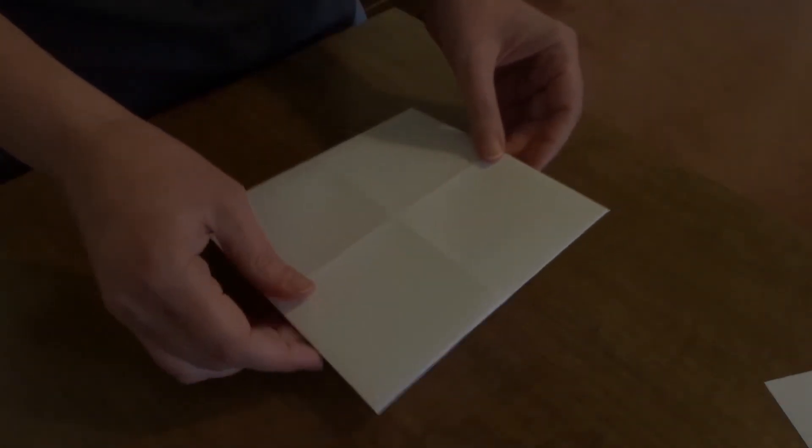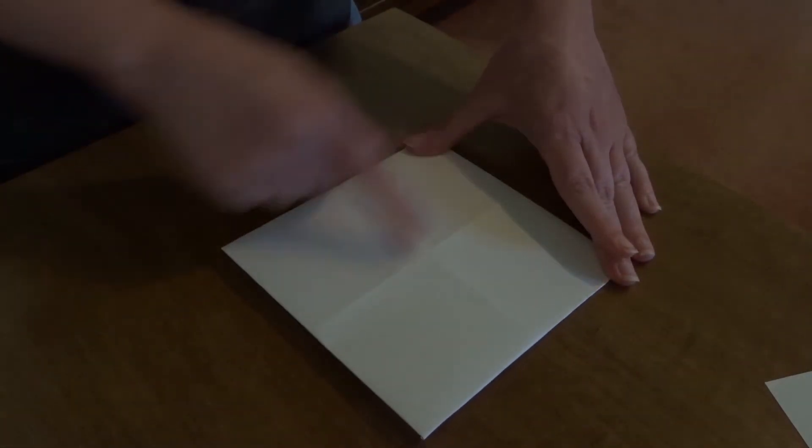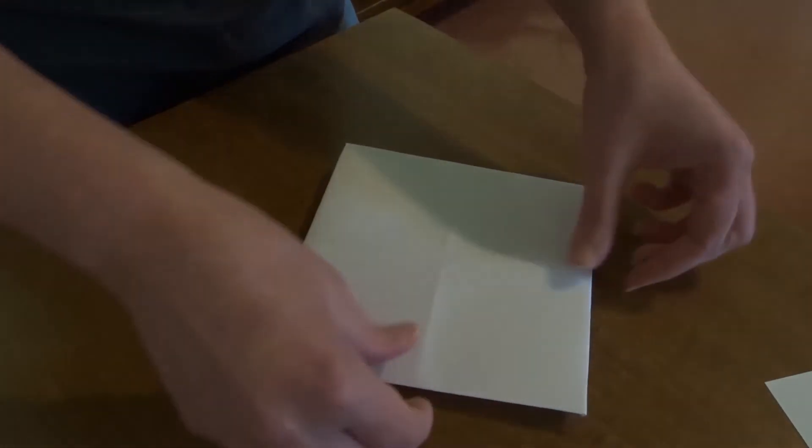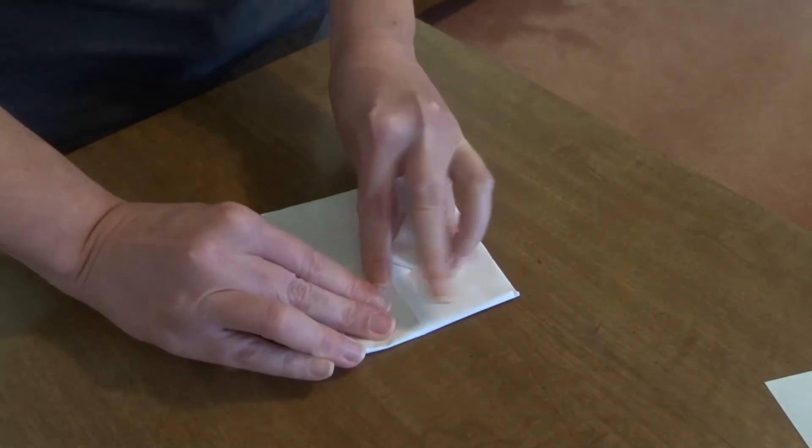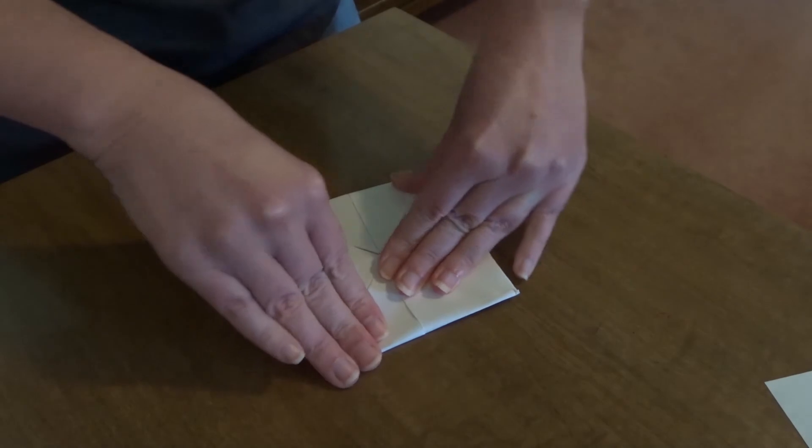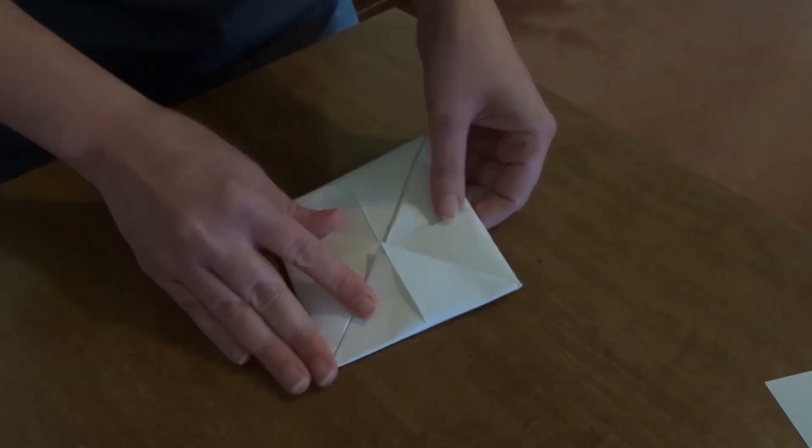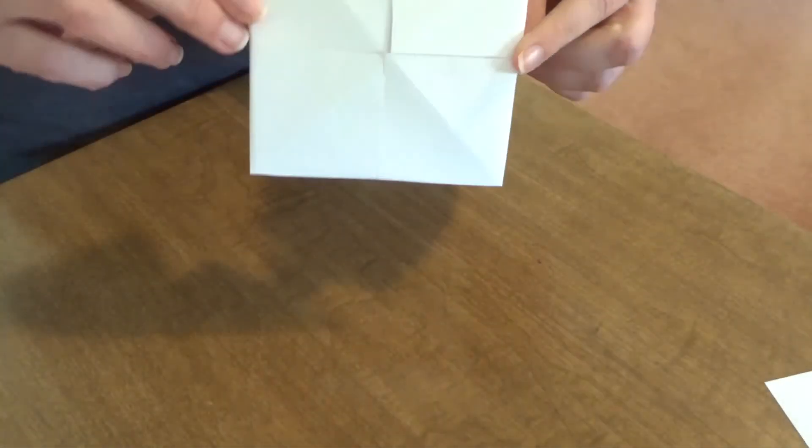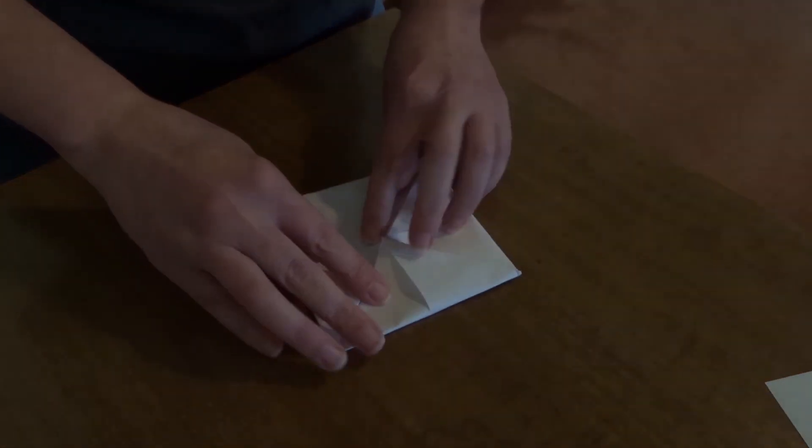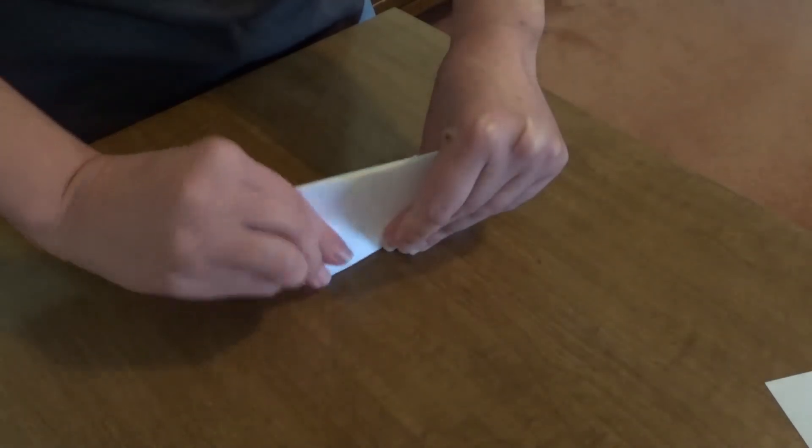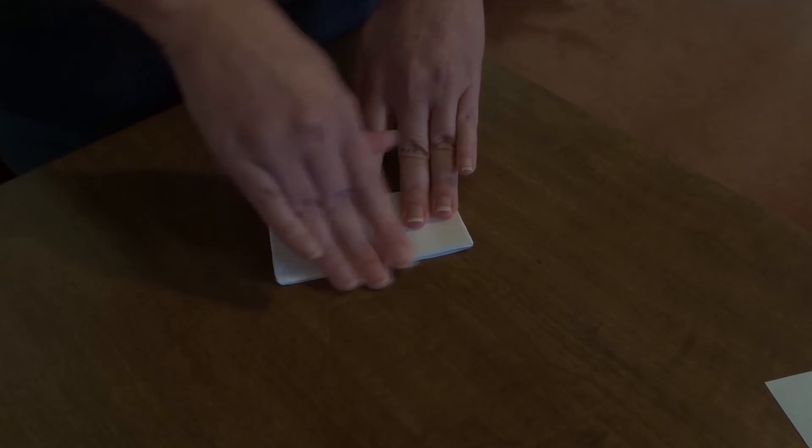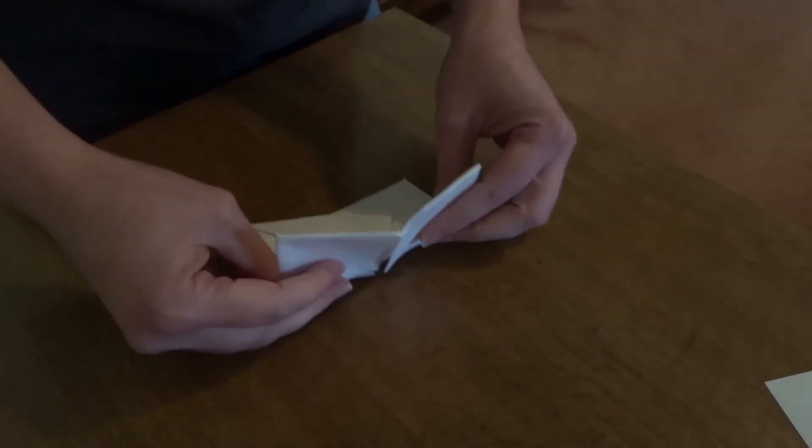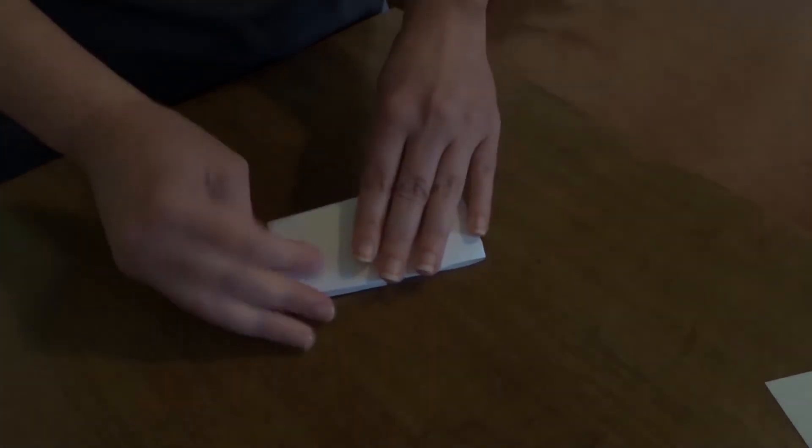We turn this over, and we have another X. Now what we do is we fold the corners in again. On this side it looks like this, and on this side it looks like this. Now we're going to fold it in half like this, and then we're going to open it up and fold it in half the other way.